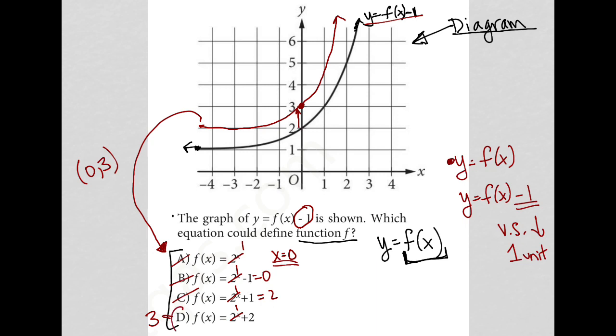And therefore, choice D is the correct answer because it is the only function. If f of x is equal to 2 to the x plus 2, we will indeed get 0, 3 as my y-intercept. And that's exactly what we want. So choice D is the correct answer here.